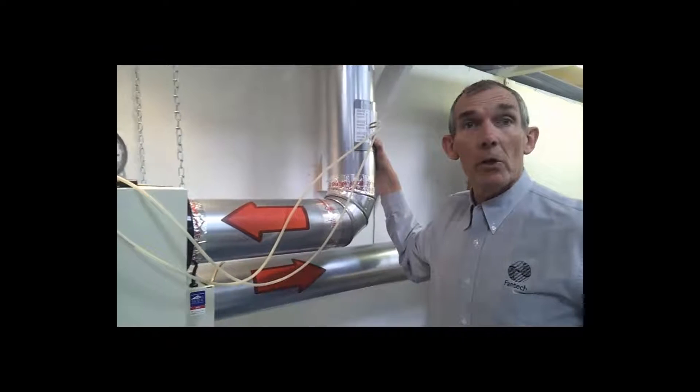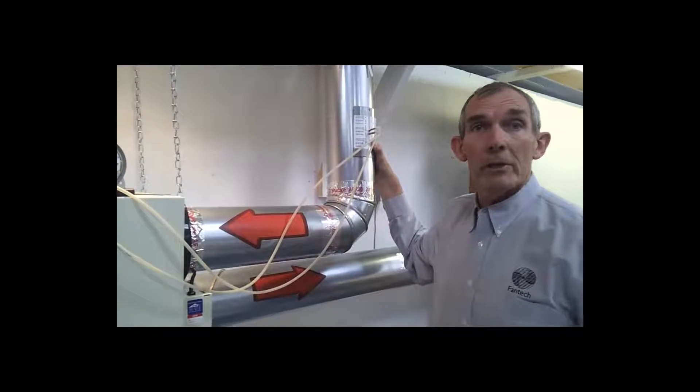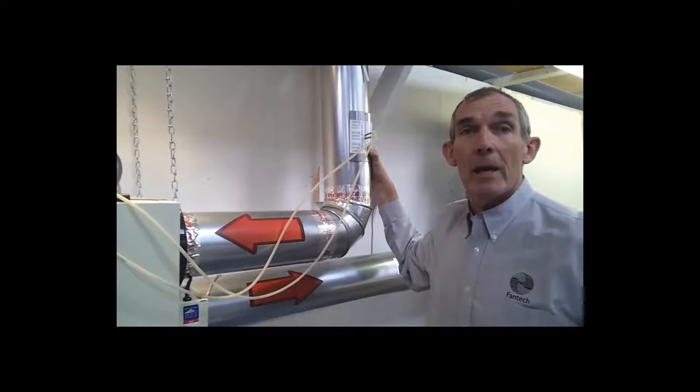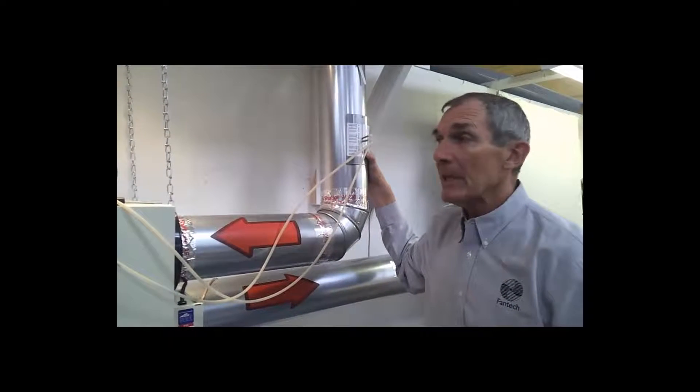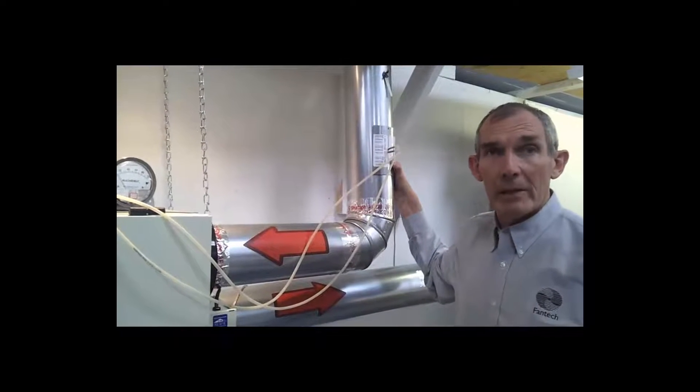A HRV or ERV system is deemed balanced if the supply and the return are within 10% of each other. In this case, they are out of balance, so they have to be balanced.